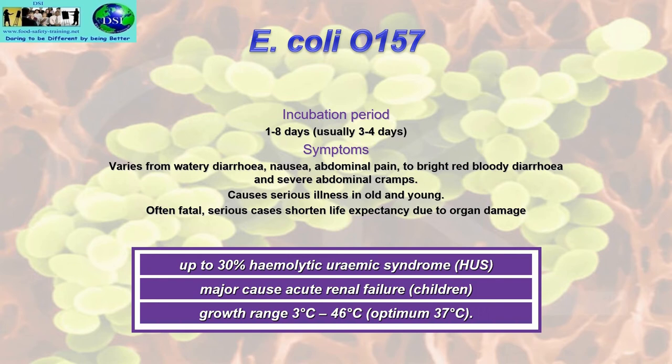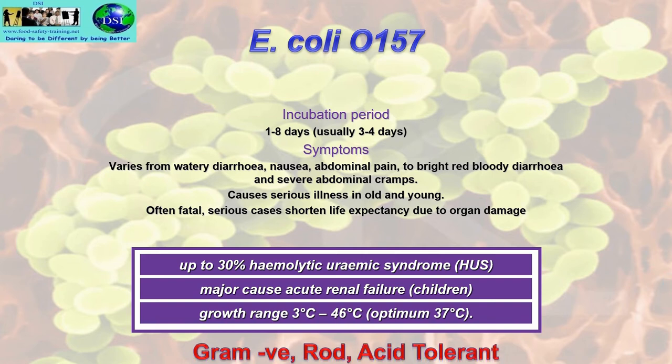E. coli is present in the human intestines — in the colon or bowel — and is actually good bacteria with a symbiotic relationship with us. It produces vitamin K from food waste in the colon. When it comes out in faeces it can mutate into variants, especially O157. It is gram-negative, rod-shaped, and acid tolerant.